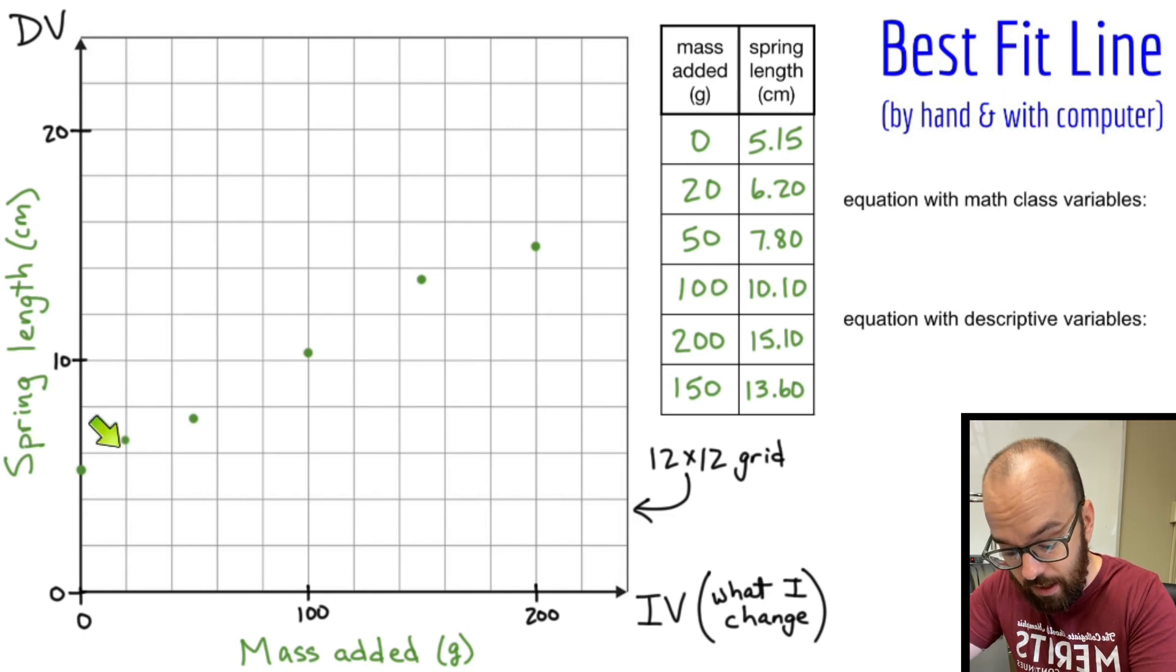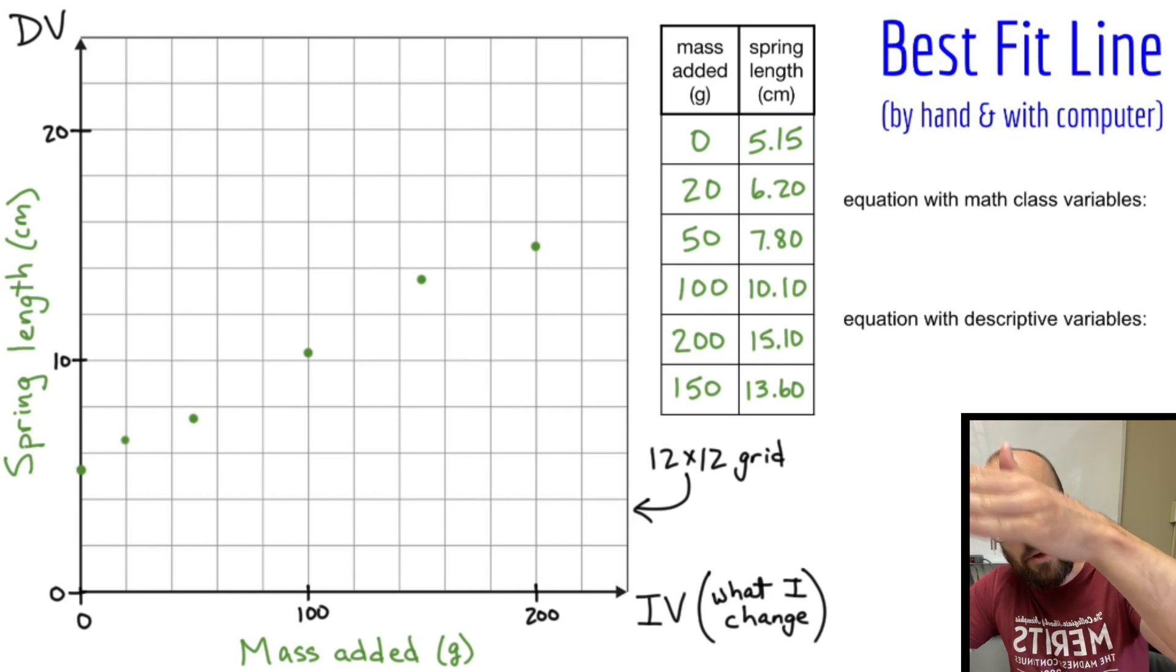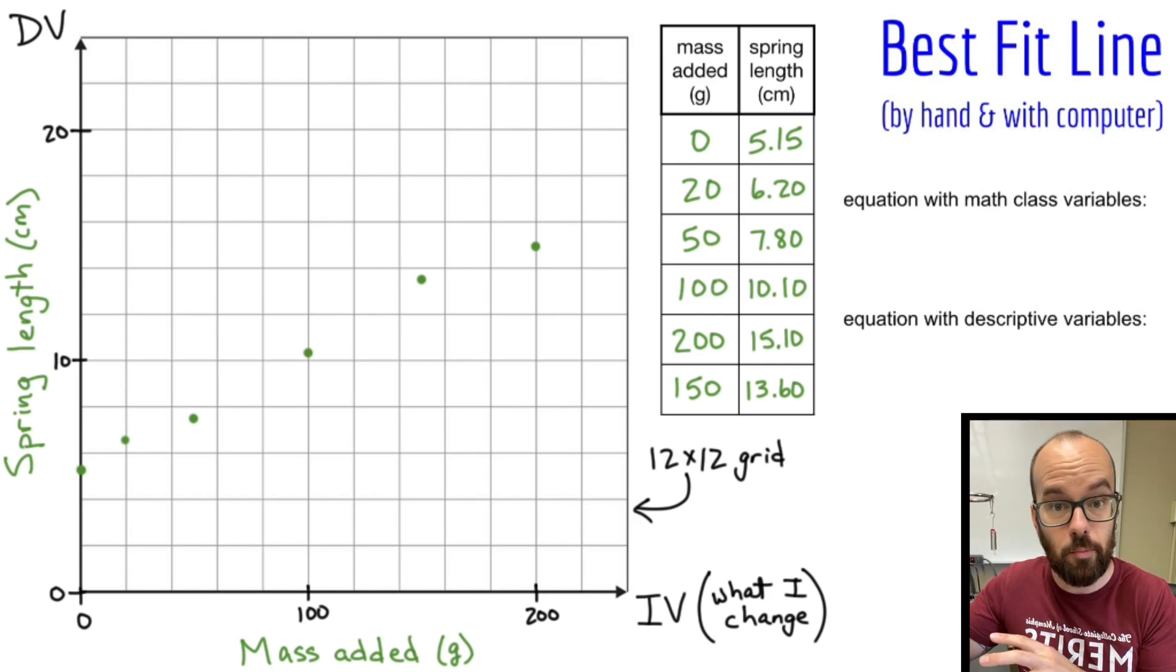It's not perfectly linear, but it's pretty linear. If I saw this kind of curving up like this, then I probably wouldn't do a linear line of best fit. I would use a computer program to do maybe a quadratic fit or an exponential fit or something other than a linear fit.